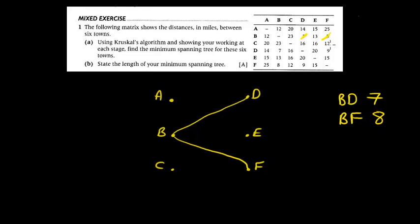What's next? 9, looks like DF, that is 9, so where is that? Ah, we can't do that, that would form a cycle. So let's just cross that off, can't do it.